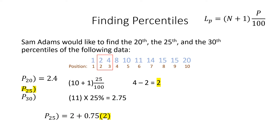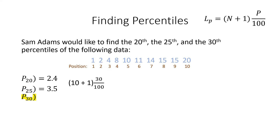We are trying to find the distance that 2.75 is away from the next position. We must take the number in the third position, 4, and subtract the number in the second position, 2. The difference gives us 2. We now take the 2 and multiply it by the 0.75: 0.75 times 2 gives us 1.5. We now add the 1.5 to our original number in the second position: 2 plus 1.5 is 3.5. The 25th percentile is 3.5.